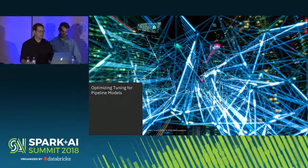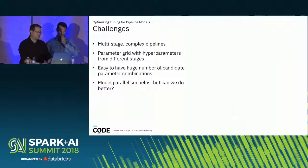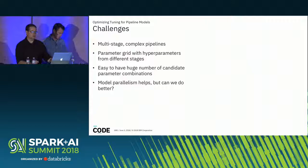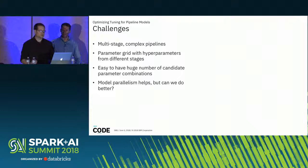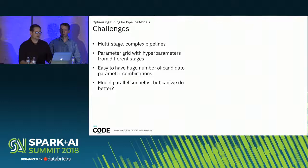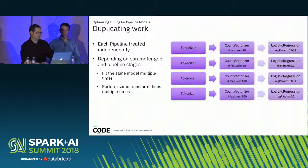Now I'm going to talk about some ongoing work for optimizing tuning for pipeline models. Most likely your real-world pipelines are going to be a lot more than just a couple of stages and will be pretty complex. You'll also most likely have a parameter grid containing hyperparameters from more than one stage. With all this, it's easy to have a huge number of possible parameter combinations and a large number of models to evaluate. Model parallelism can help, but we can actually do more optimizations on these pipelines to do even better.